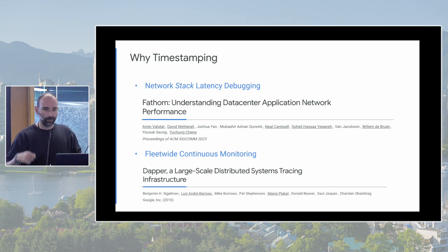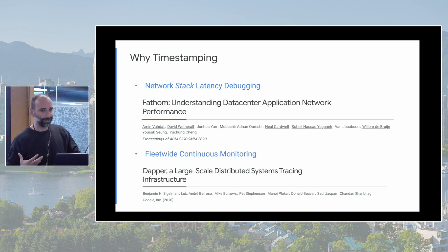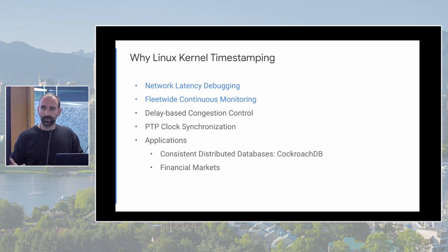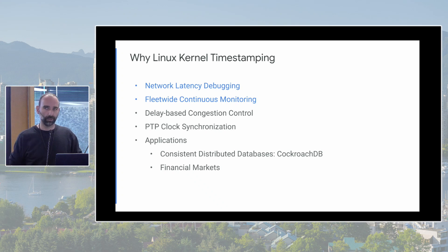Fathom is based on something called Dapper, published about 13 years ago, which is a fully user-space distributed tracing database. Fathom extends it into the kernel. The extra information Fathom gets comes from the Linux kernel. Beyond fleet-wide monitoring, other valid use cases for kernel timestamps include delay-based congestion control — if an algorithm wants to know the network RTT, you want to measure it as close as possible to the network, not in the application layer.